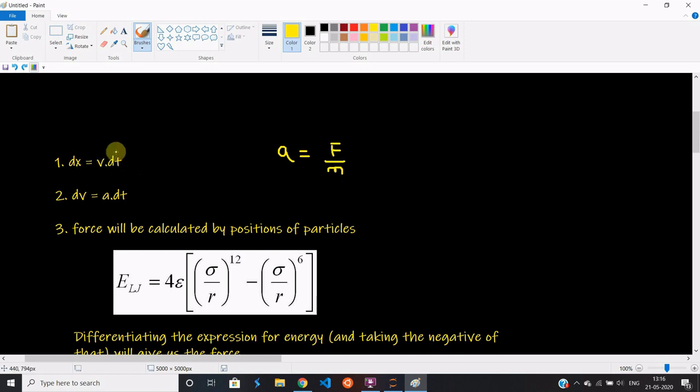We'll get the position of particle one for the next instant, and similarly for all the particles. Now, say at instant number one we have the positions and the velocities. At instant number two we have the positions, but to calculate the positions for instant number three, we don't have the velocities here.